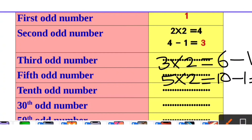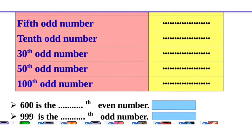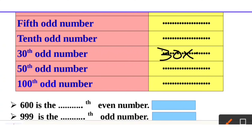Now for odd numbers. The 10th odd number is 10 into 2 minus 1, which is 19. The 30th odd number is 30 into 2, which is 60, minus 1, equals 59.